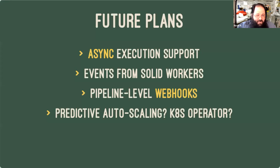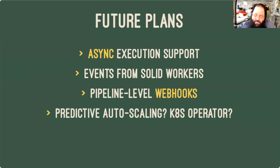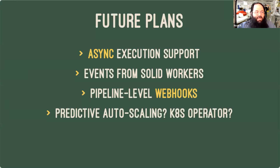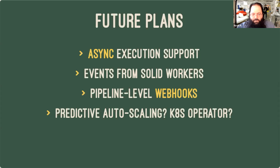We'd also like to fix that incremental feedback gap, or more generally have ways for non-Dagster systems to yield events into the Dagster event framework. Another thing we're looking at is pipeline-level webhooks. Right now it's really easy to deal with successes — we just have a solid that notifies our backend system when the thing is finished. But if it fails, we have to poll GraphQL because we don't know where it will fail. Having a pipeline-level hook for failures in particular would allow us to automatically notify our backend system so maybe it shows the user an error or retries.